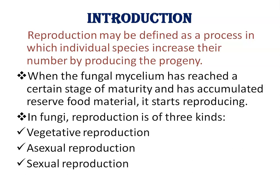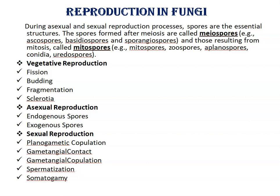When the fungal mycelium has reached a certain stage of maturity and has also accumulated reserved food material, it starts reproducing. In fungi, reproduction is of three types: vegetative reproduction, asexual reproduction, and sexual reproduction. During asexual and sexual reproduction, spores are the essential structures which are formed.